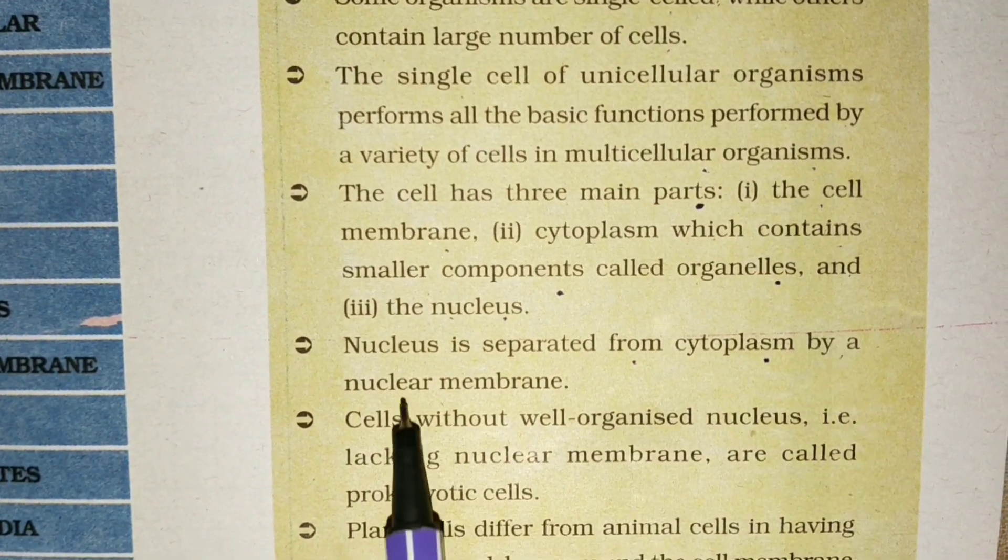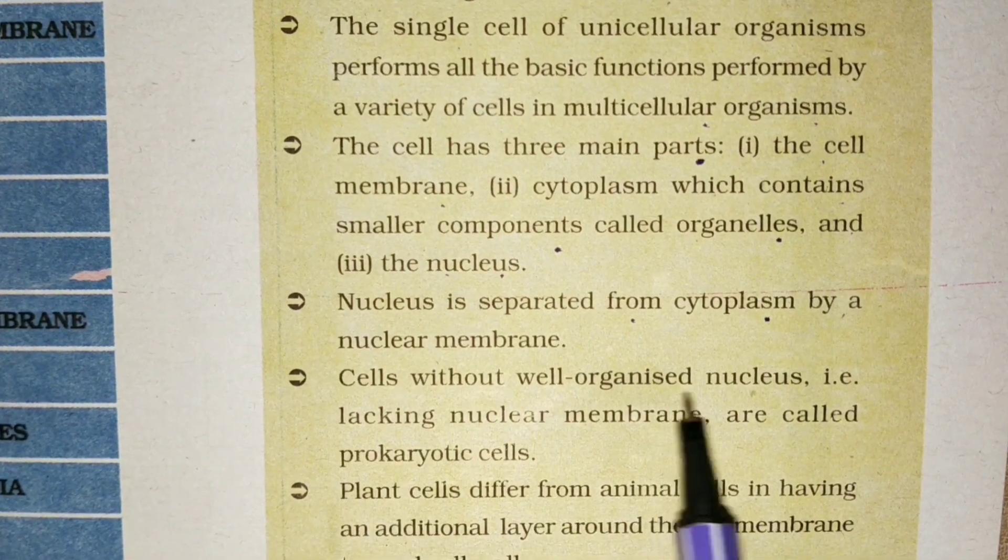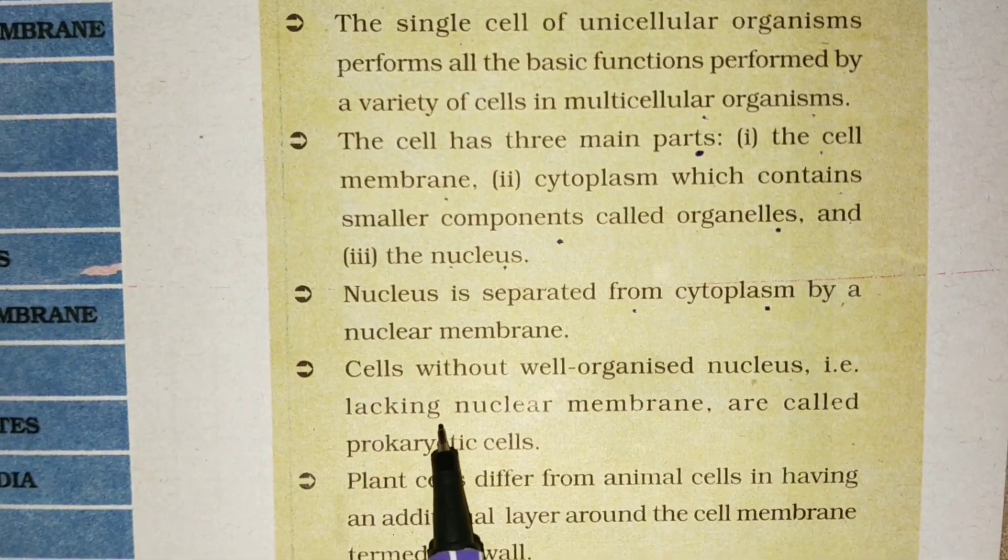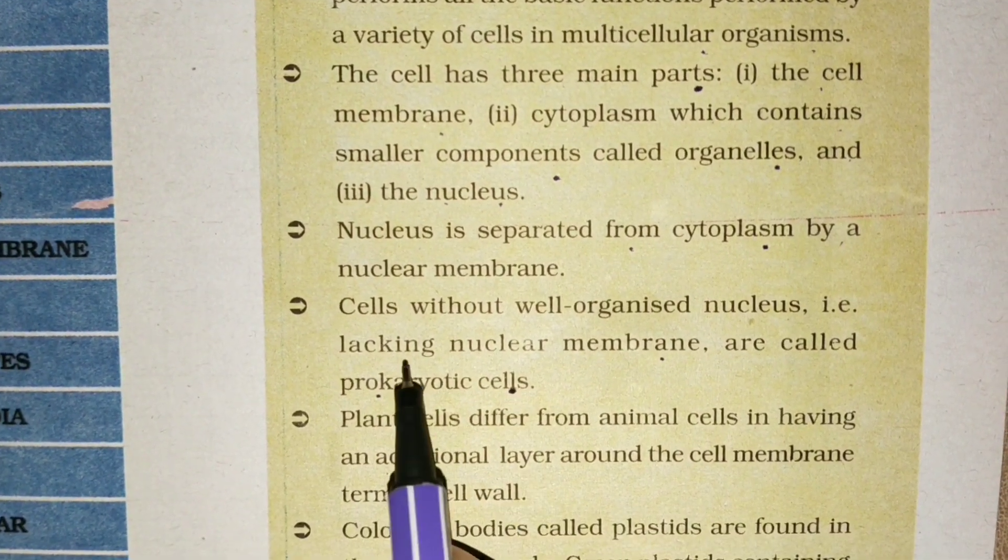cytoplasm by a nuclear membrane. Cells without well-organized nucleus, that is lacking nuclear membrane, are called prokaryotic cells.